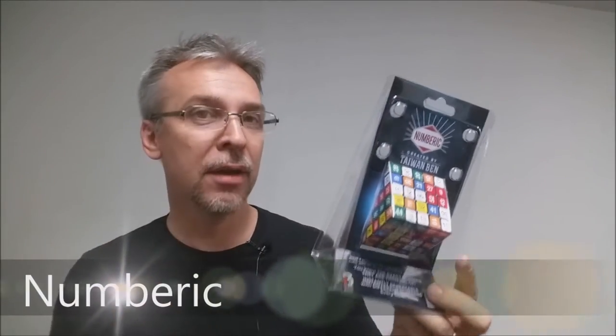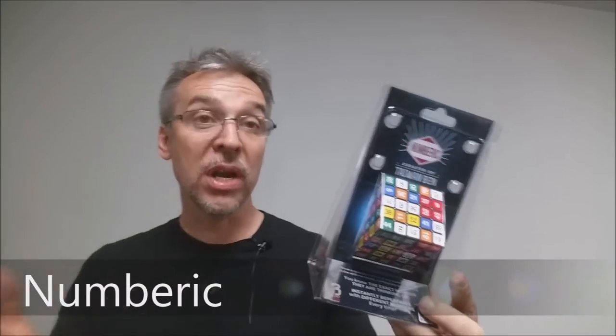Hey, today we're going to look at Numbrick from Taiwan Ben. What is Numbrick? Basically, it is a 5x5x5 speed cube, Rubik's cube, if you've ever seen the speed cubes.